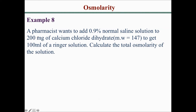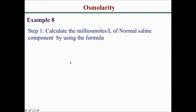Example 8: A pharmacist wants to add 0.9% normal saline solution to 200 milligrams of calcium chloride dihydrate with a molecular weight of 147 to get 100 mL of a parenteral solution. Calculate the total osmolarity of the solution. Our first step is to calculate the milliosmol per liter of the normal saline component using the formula.